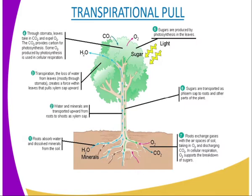As water evaporates from plants, more is absorbed from the soil. This forms a continuous stream of water flowing from the roots up the stem to the evaporating surface. This continuous flow of water is known as the transpiration stream. This transpiration stream carries water and mineral salts in solution form from the roots to the leaves. This flow takes place in the xylem tissue.